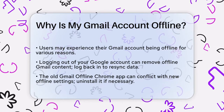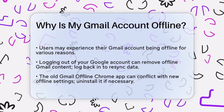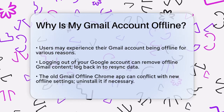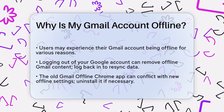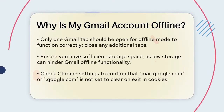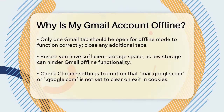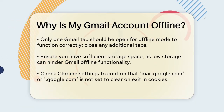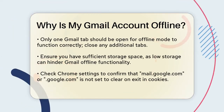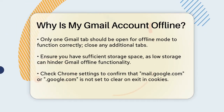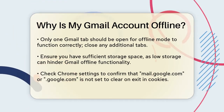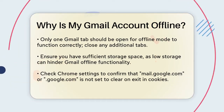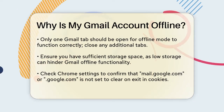Another common issue is the old Gmail offline Chrome app. If you have this app installed, it can conflict with the new offline settings in Gmail. You need to uninstall the old app from your Chrome apps list before enabling offline mail in your Gmail settings. If you've already enabled offline mail but are having issues, uninstall the old app, then re-enable Gmail offline.